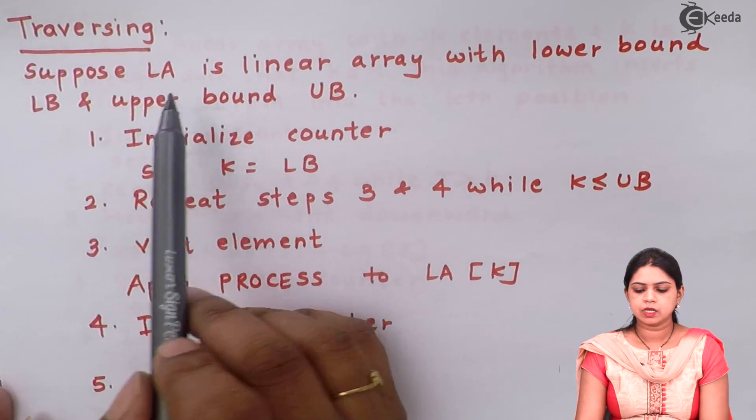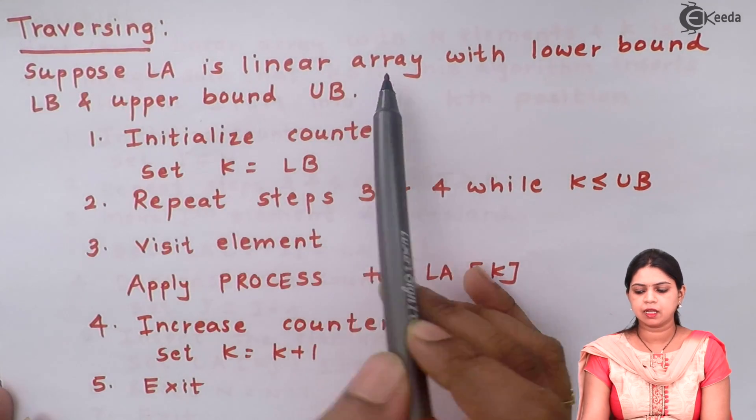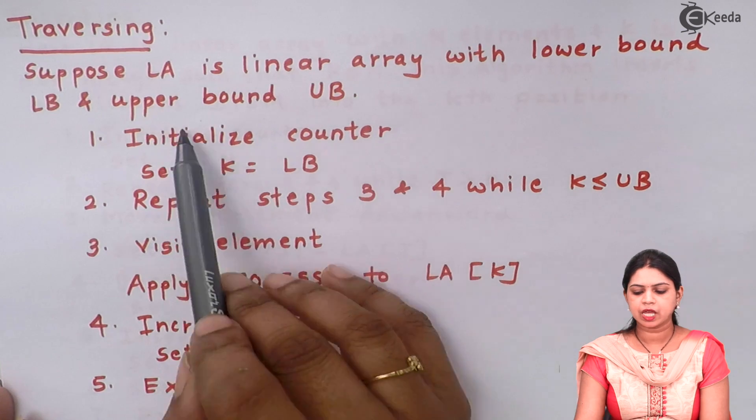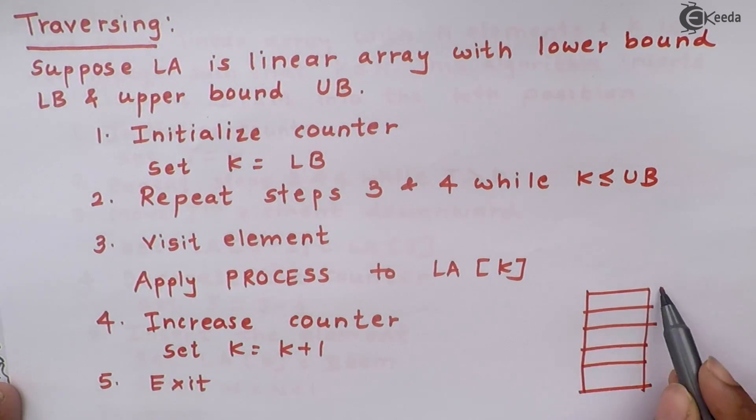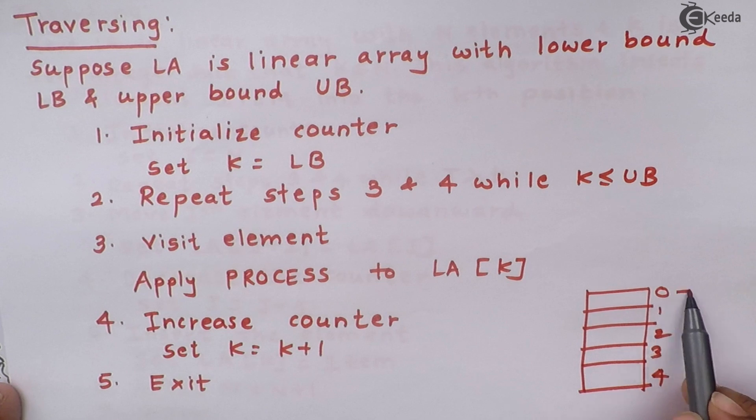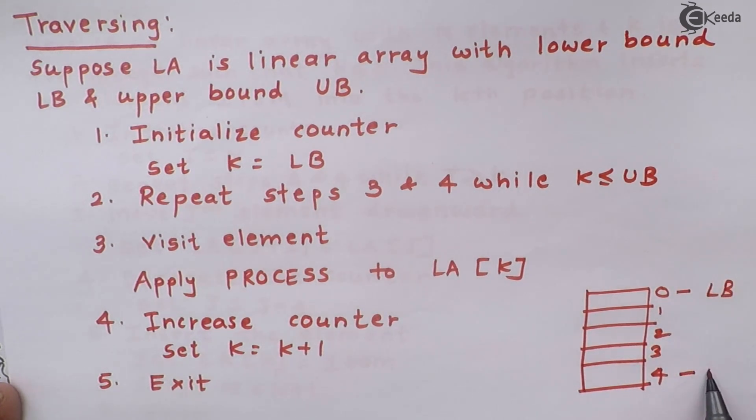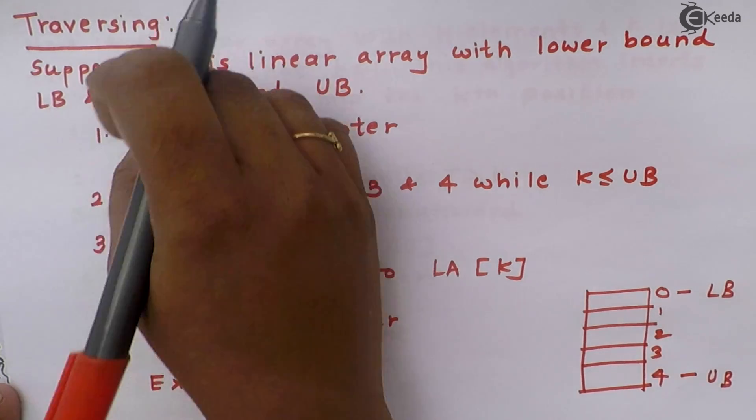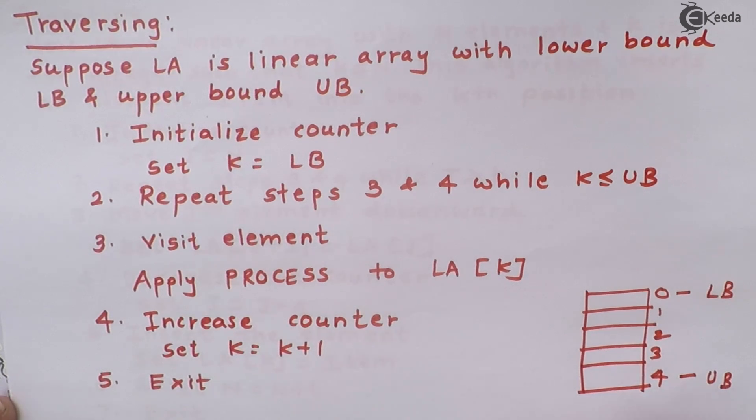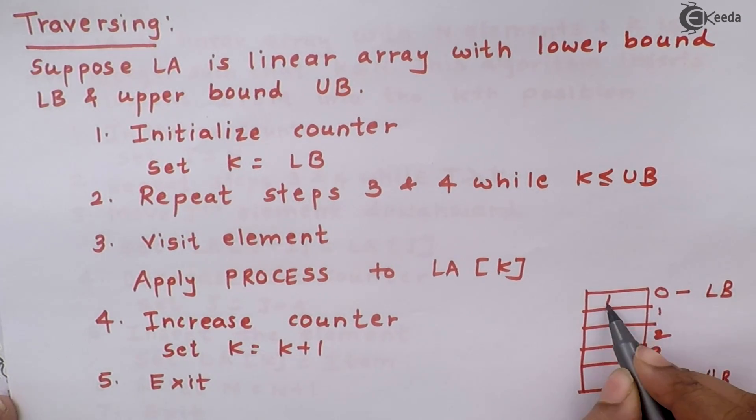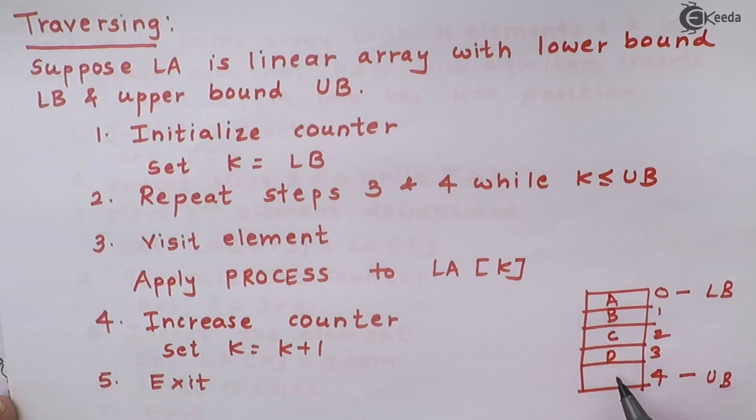See the algorithm: suppose if LA is a linear array with lower bound LB and upper bound UB. So let us draw one array. Suppose if this is array where I have total 5 elements into it. 0, 1, 2, 3, 4. So 0 is nothing but my lower bound and 4 is my upper bound. Now in this particular array, I will be applying traversing operation. How to do that? We will see with the help of algorithm. Now suppose in this array I have the elements called as A B C D E.